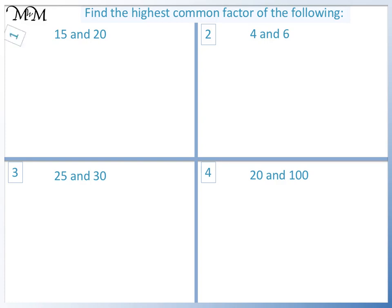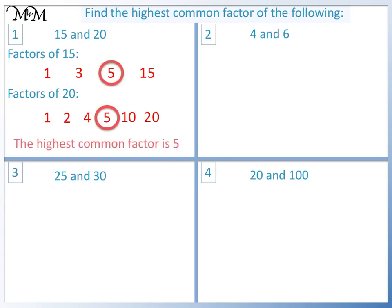Question 1: Factors of 15 are 1 and 15 and 3 and 5. Factors of 20 are 1 times 20, 2 times 10, and 4 times 5. The highest common factor is 5.